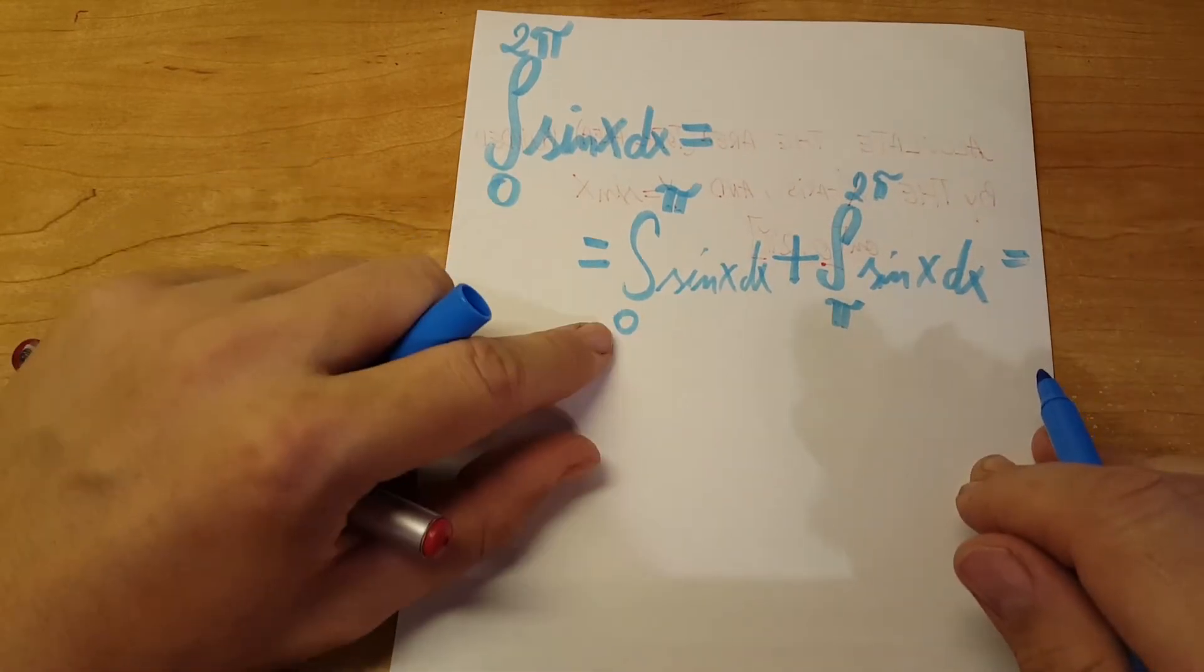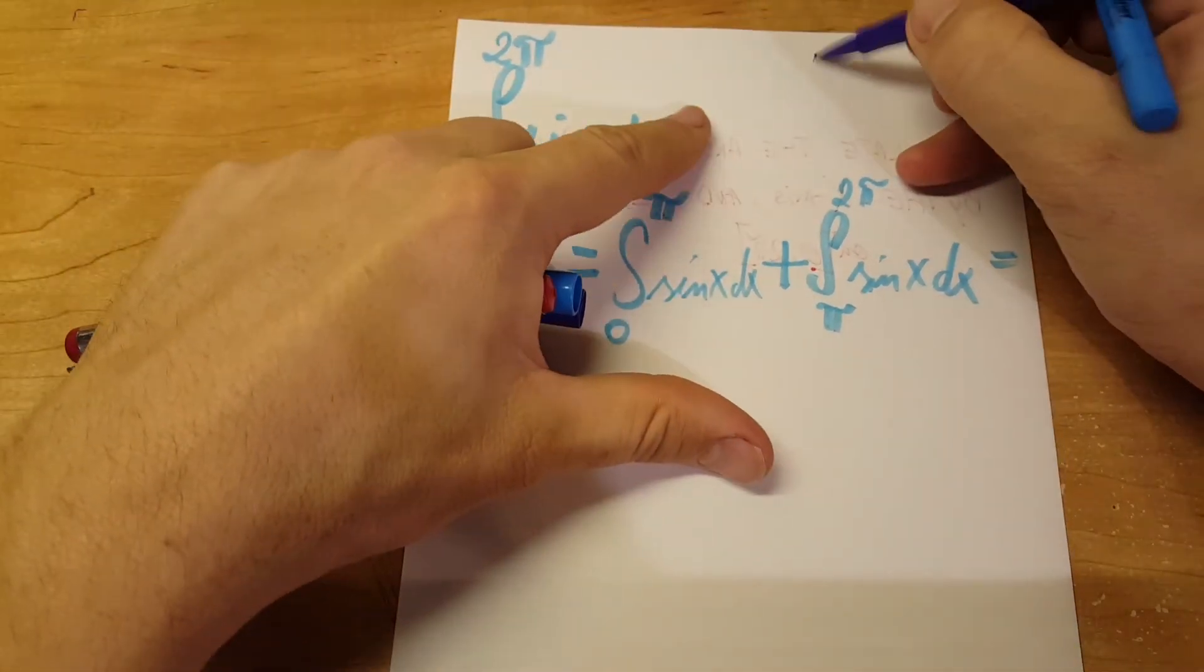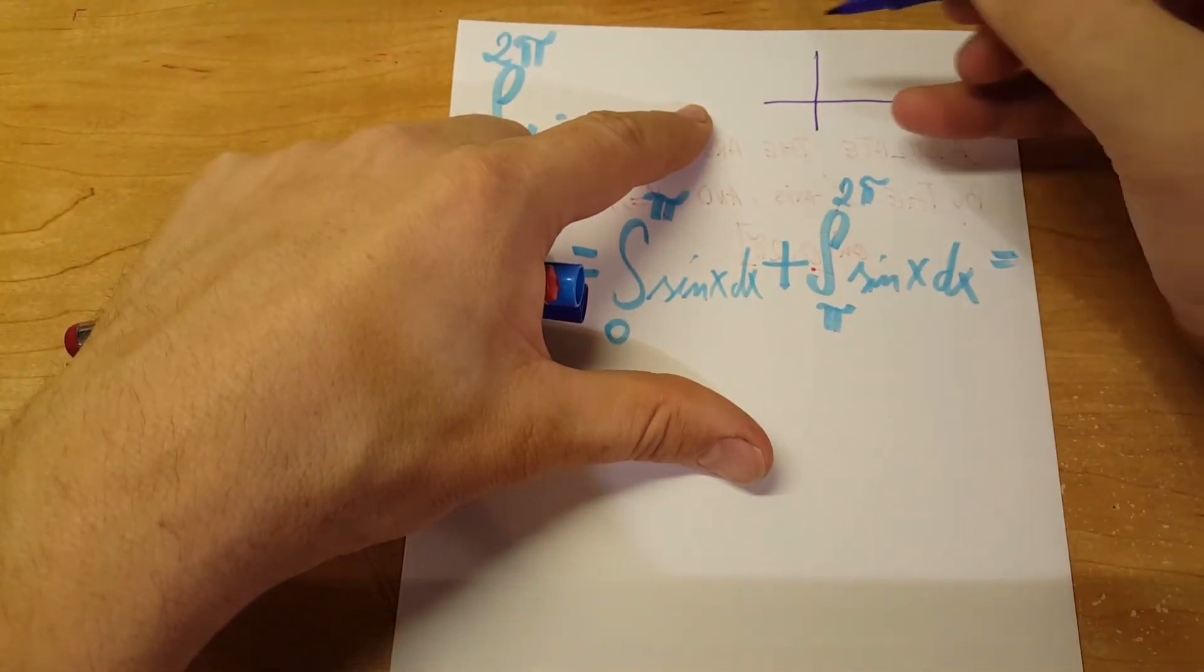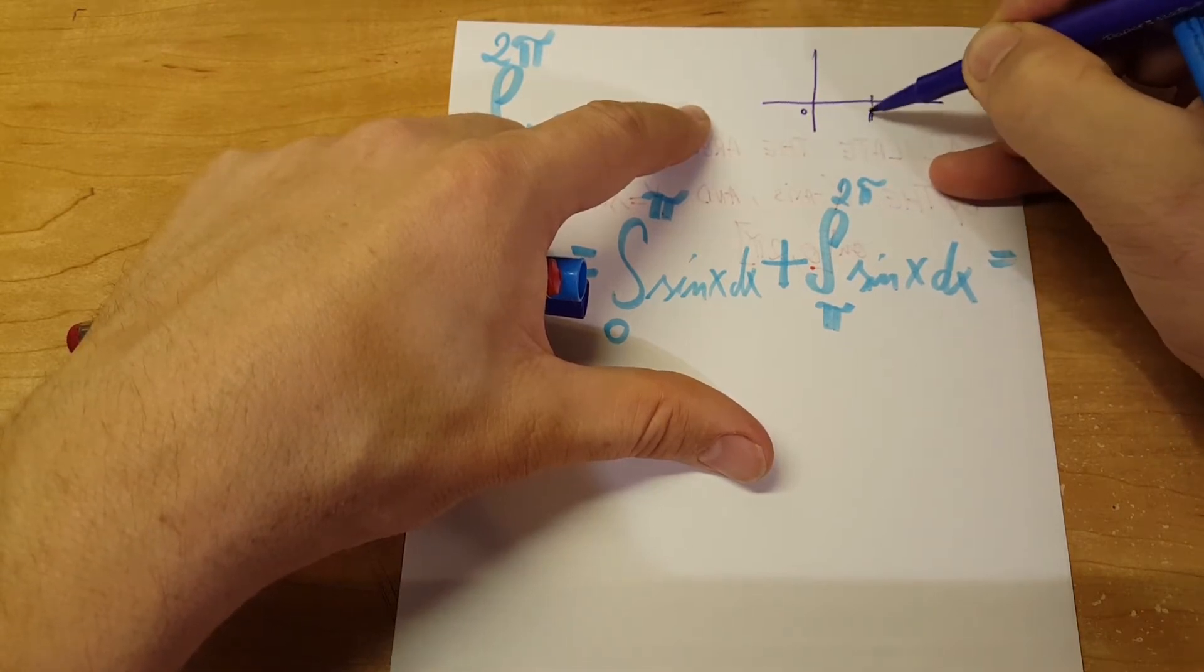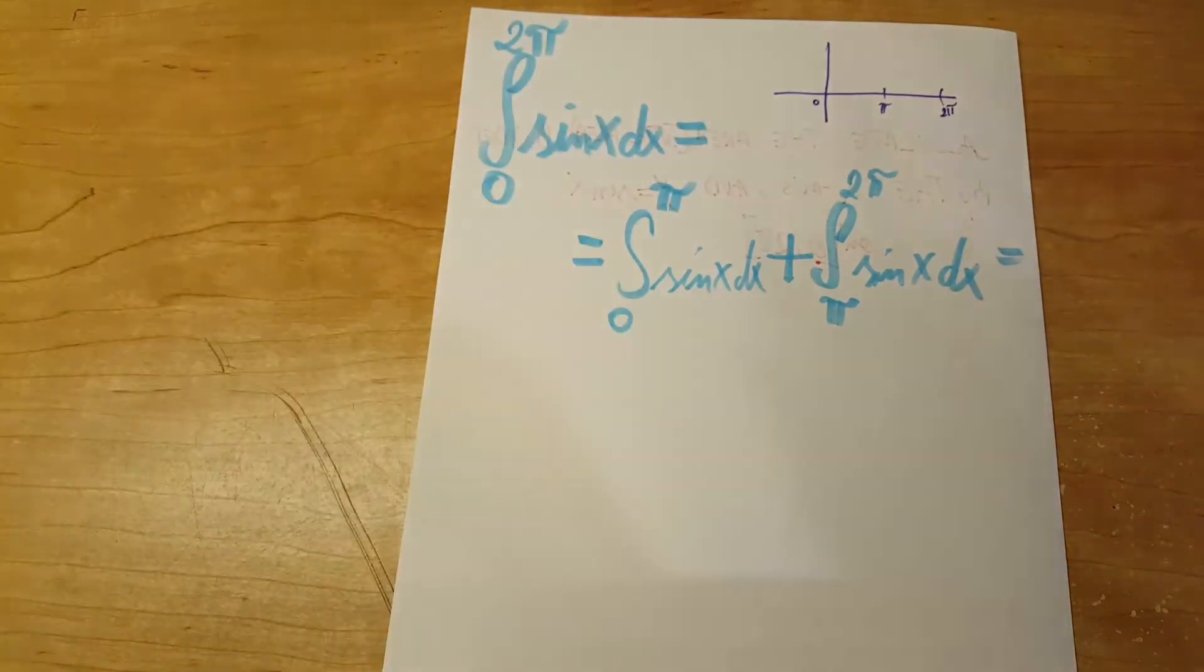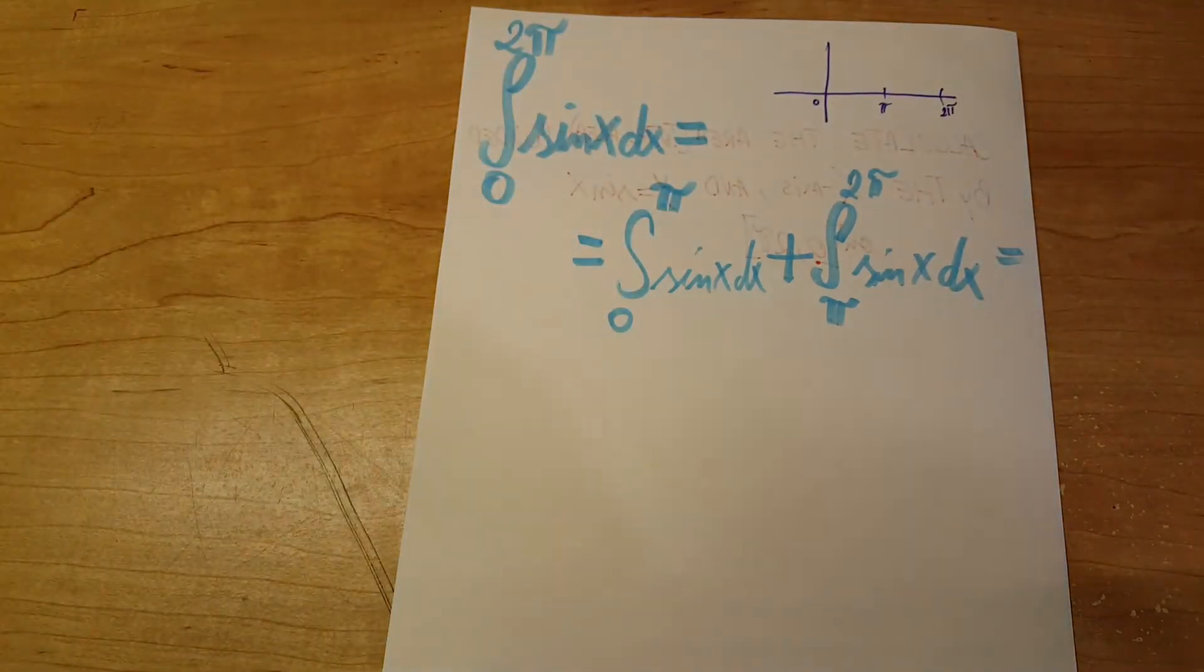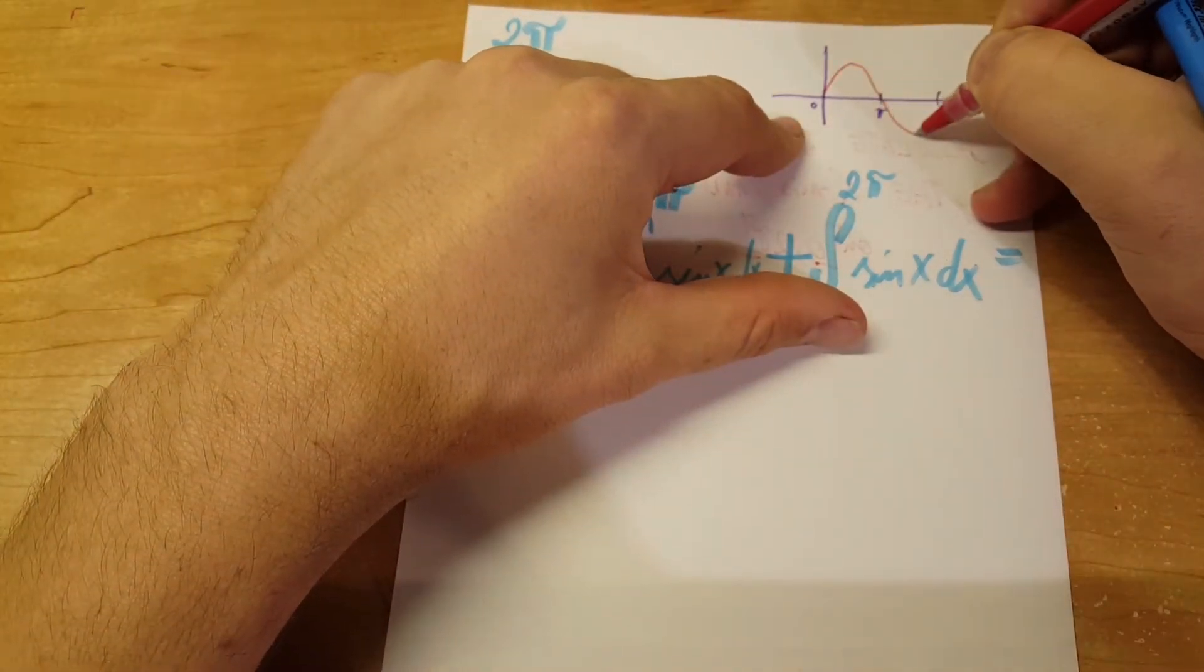Now I'm gonna make a little graph here so we can visually understand it a little bit better. This would be zero, this would be pi, and this would be two pi. Sine is gonna go like this.